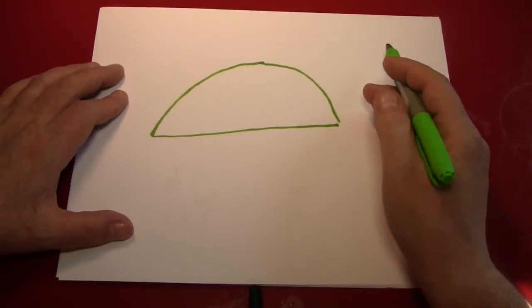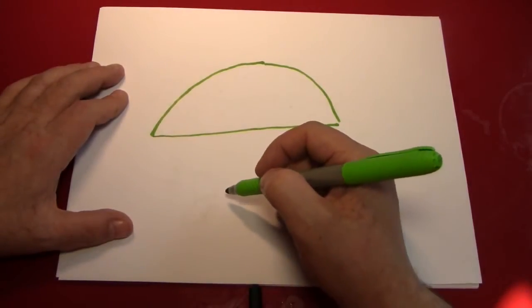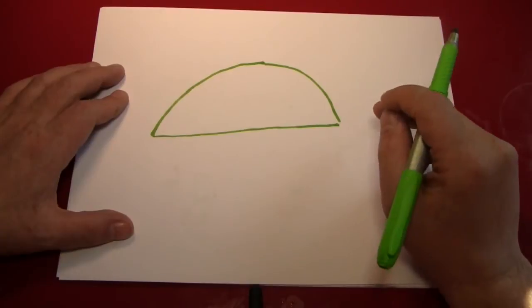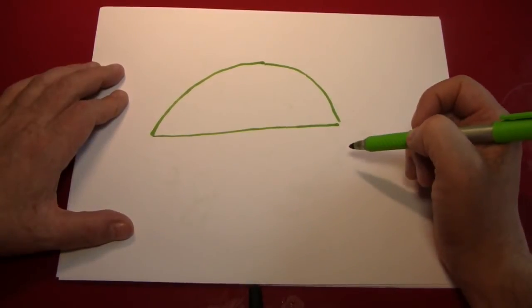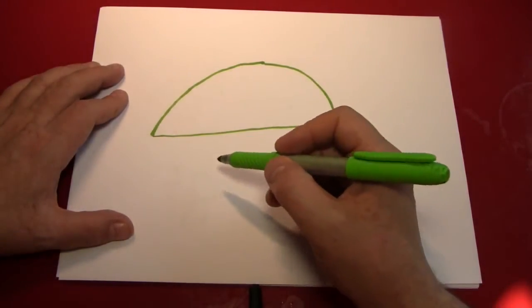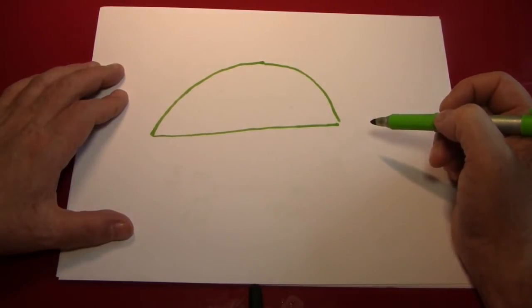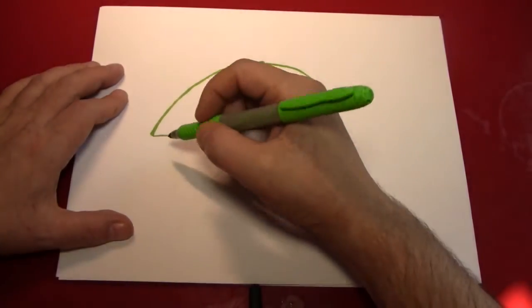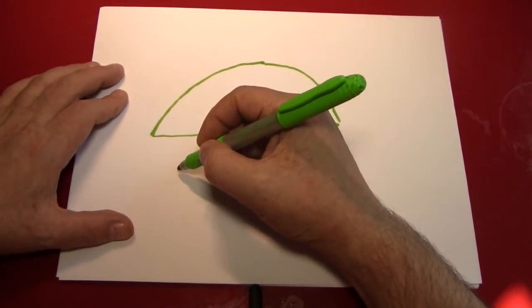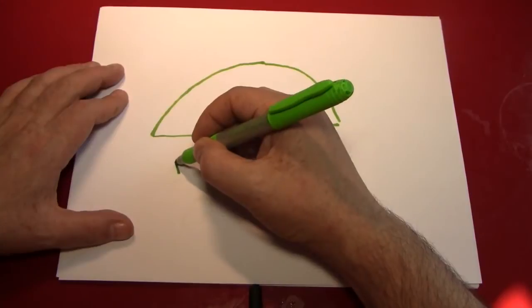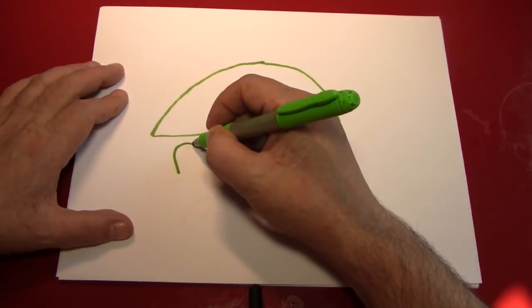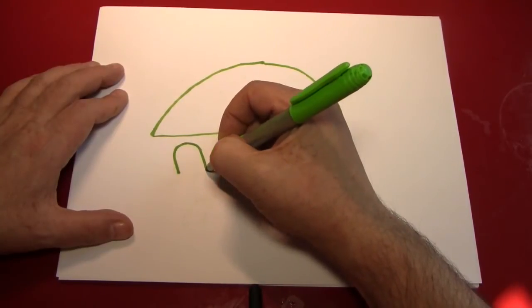Next, what we're going to do is draw some legs. Now unlike turtles, tortoises are land animals and have thick stocky legs, kind of similar to elephants I guess. Let's draw one. What I suggest to do is make an upside down U, a fairly good sized one, right about here.